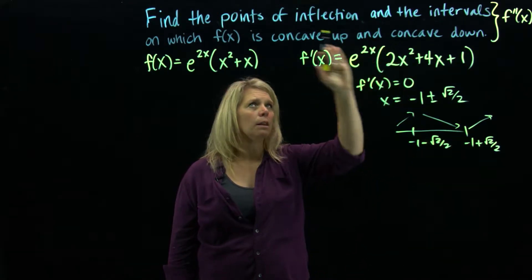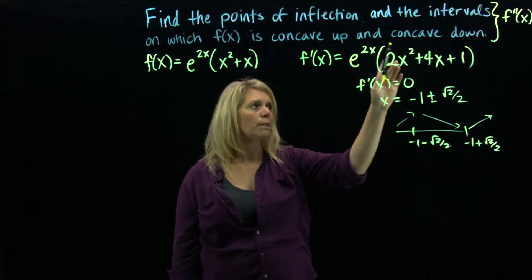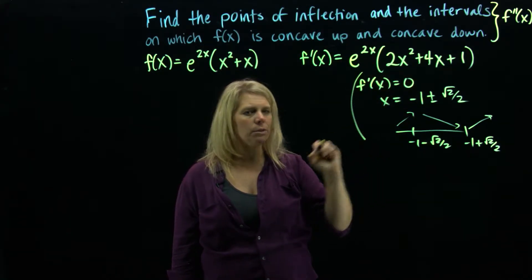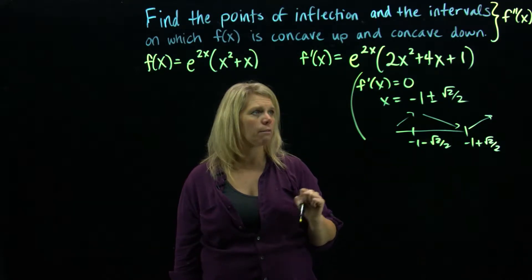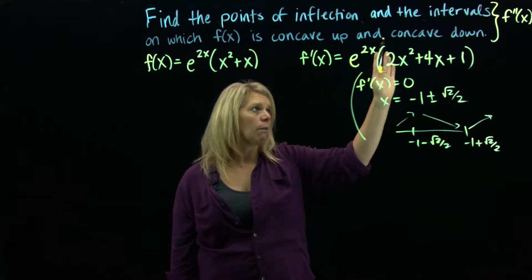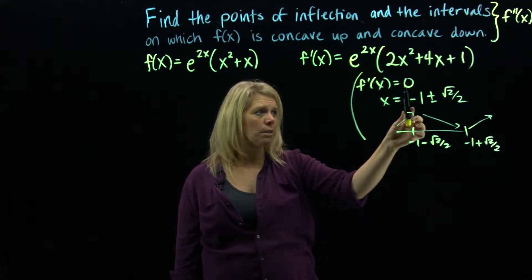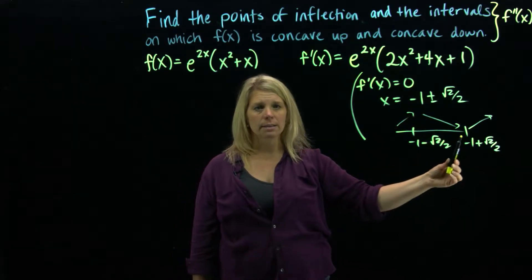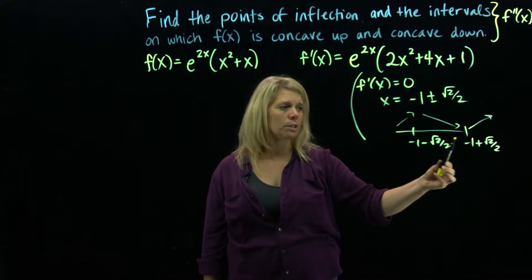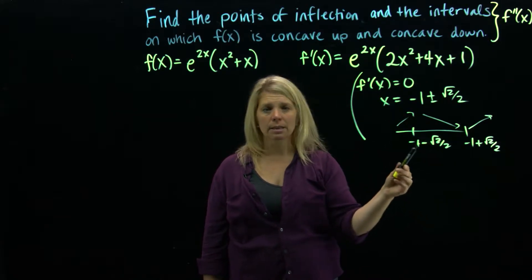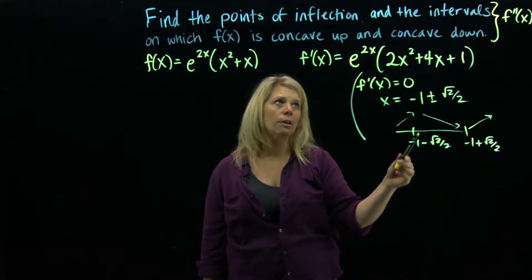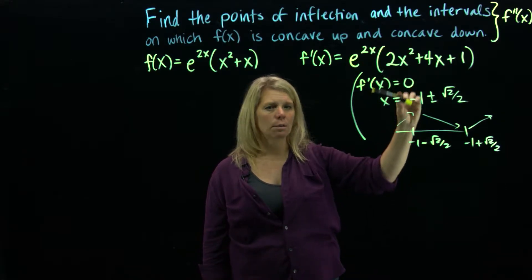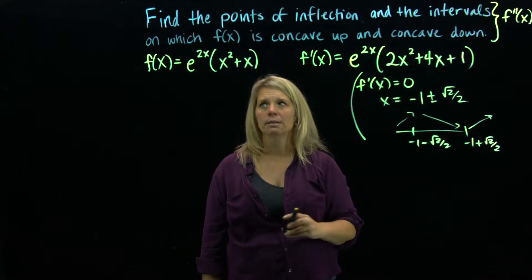Now we're going to work with the second derivative, essentially doing the same process we did with the first derivative. We're going to look at where the second derivative is zero or does not exist, solve for x, and look at a sign chart. That sign chart won't tell us about increasing and decreasing — it's going to tell us about concave up and concave down — but the process is the same.